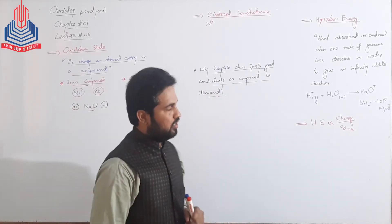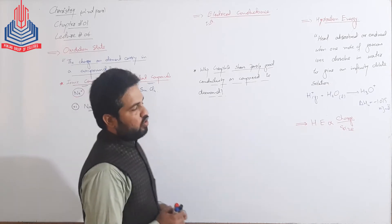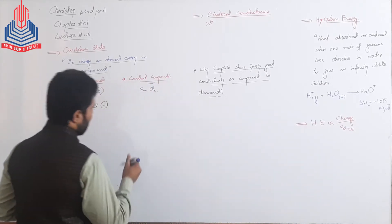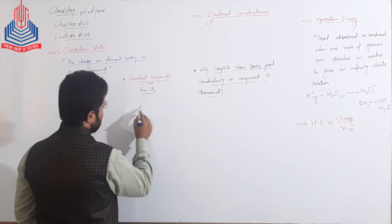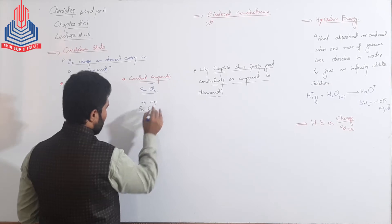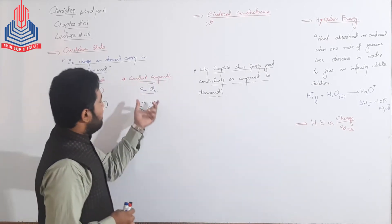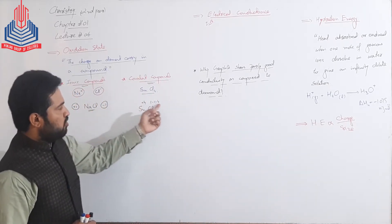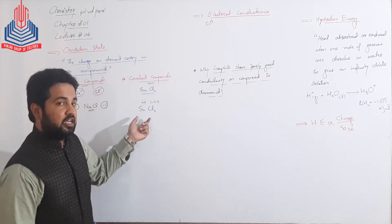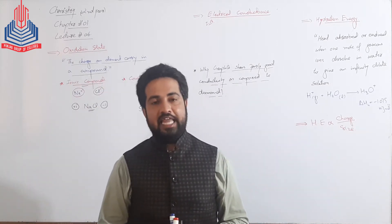Plus one ہوگی Sodium کی اور minus one ہوگی Chlorine کی۔ اگر ہم Covalent Compounds کی بات کریں تو Covalent Compounds کی Oxidation States depend کرتی ہیں ان کی Electro-Negativity values پر۔ Stannous Chloride (Tin Chloride) میں Tin کی Oxidation State is plus 4, and the Oxidation State of one Chlorine is minus 1, and for 4 Chlorines it will be minus 4. Since Chlorine is more Electro-Negative than Tin, that is why Oxidation State of Chlorine will be written with negative signs.